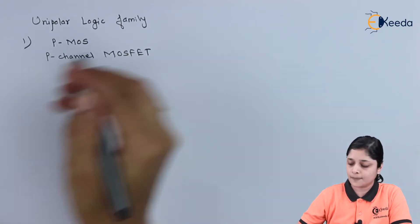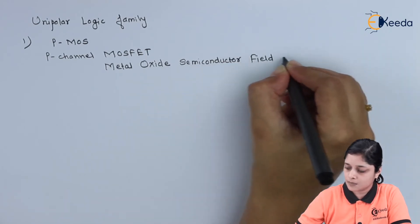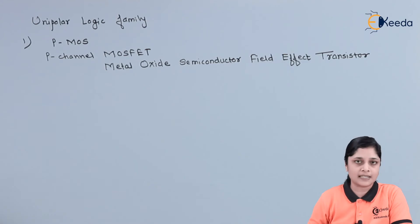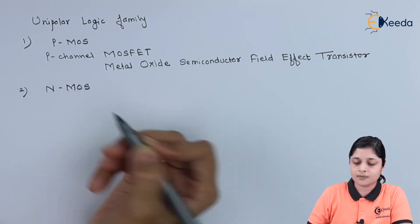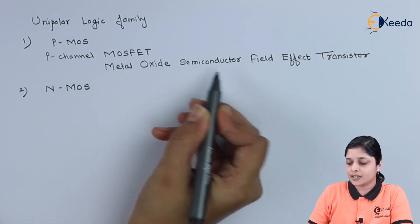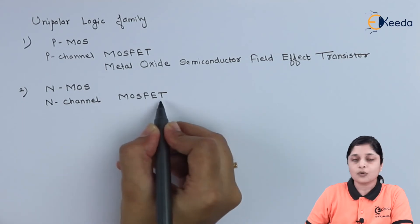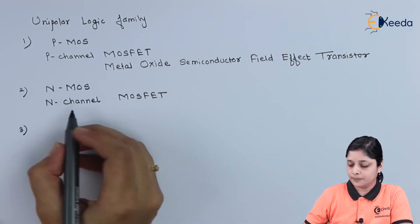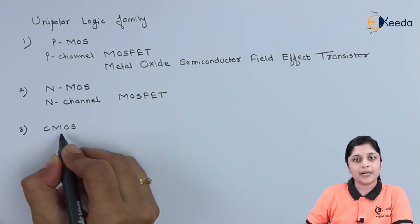The second type is NMOS, that is N-channel MOSFET — N-channel Metal Oxide Semiconductor Field Effect Transistor. The long form of MOSFET is the same: Metal Oxide Semiconductor Field Effect Transistor. The third type is CMOS, and the long form for CMOS is Complementary Metal Oxide Semiconductor.